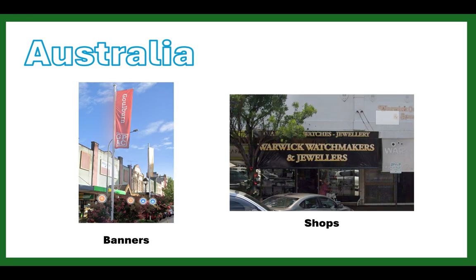Other useful information includes banners and signs that name the city you're in. For example, a banner saying Goulburn places you in New South Wales, and a shop called Warwick Watchmakers and Jewelers places you in Queensland. Being familiar with town names helps you identify whether a name refers to a city rather than a brand. One of the best things you can do to improve moving gameplay and pinpointing skills is becoming more familiar with different cities in different countries — the more towns you know, the faster you'll find things.